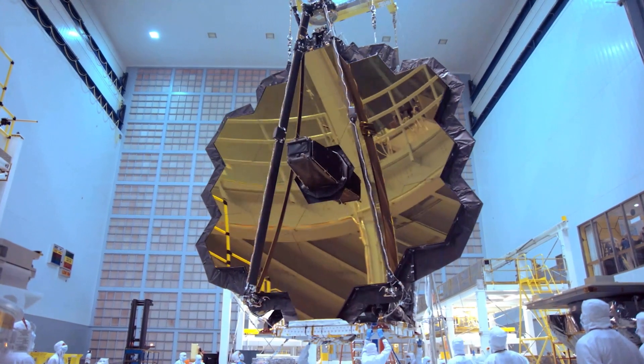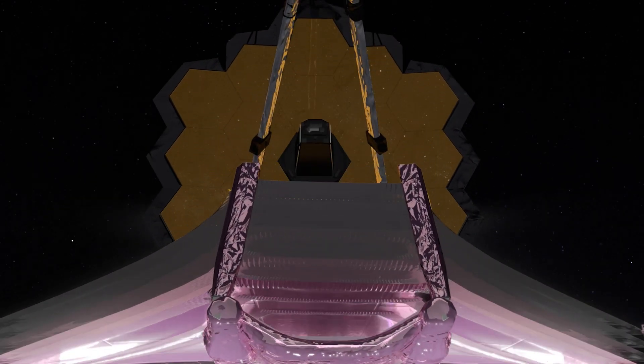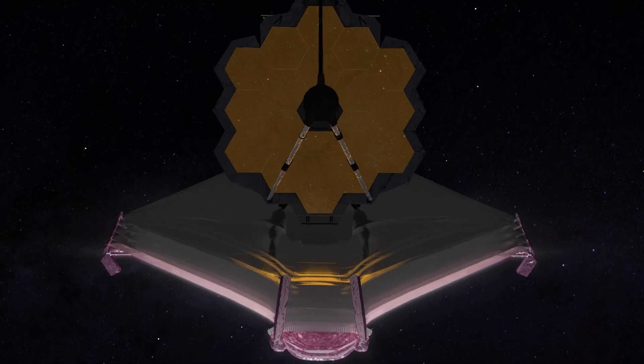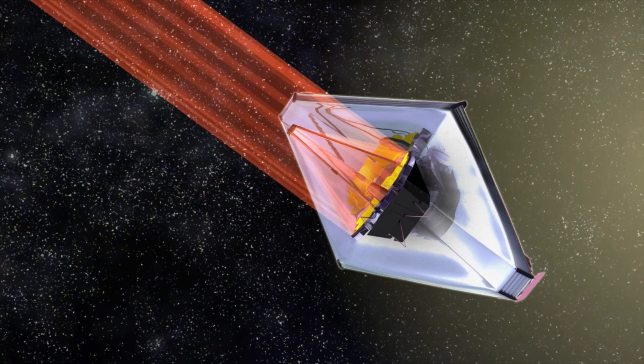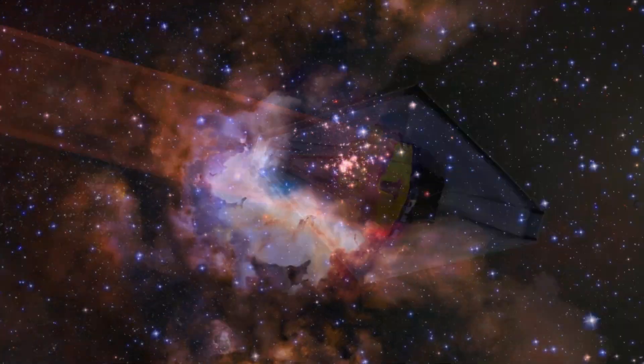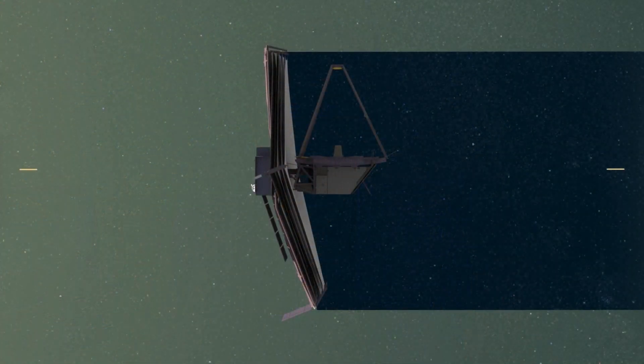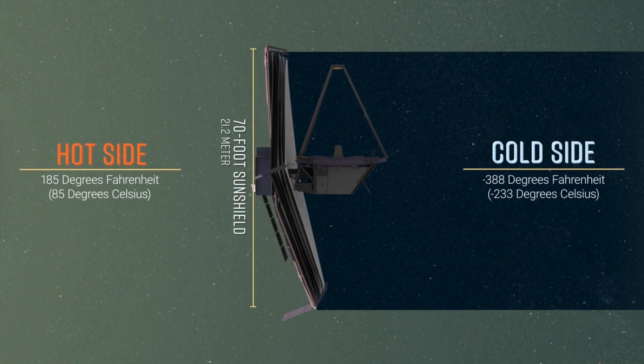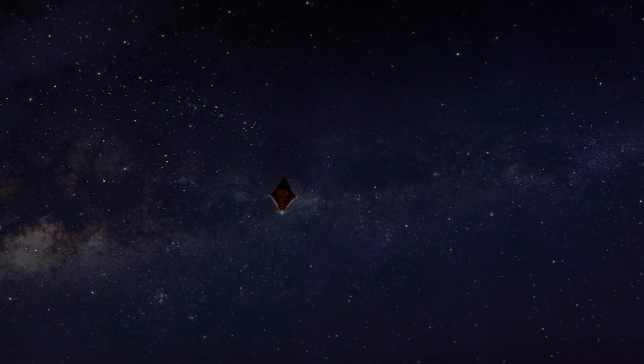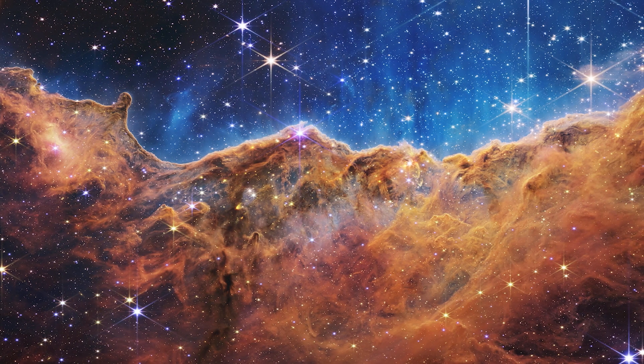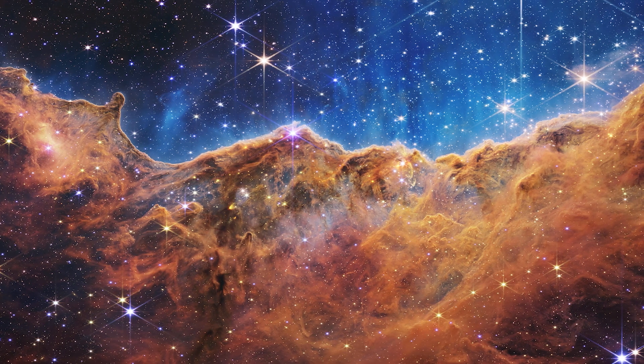It has a 6.5-meter segmented mirror, a mosaic of 18 hexagonal beryllium segments that collects light in wavelengths from 0.6 to 28.5 microns, far beyond the reach of most ground-based observatories. Webb's telescope-sized sunshield blocks heat and stray light, allowing its instruments to cool to a frigid 50 Kelvin. In this pristine airless environment, Webb can peer through clouds of cosmic dust to reveal stars being born.